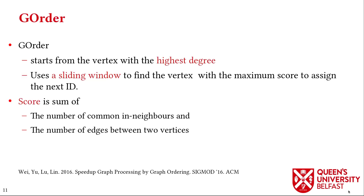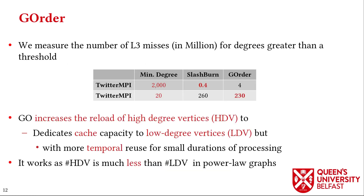GOrder is the next reordering algorithm we investigate. It starts from the vertex with maximum degree and uses a sliding window to find the vertex with maximum score among the neighbors of vertices that recently received IDs. We measured the number of last-level cache misses for vertices with degree greater than a threshold, which shows that GOrder increases the reload of high-degree vertices to free cache capacity for low-degree vertices. This allows GOrder to reduce the reload of low-degree vertices, which have a much greater quantity in power-law graphs.